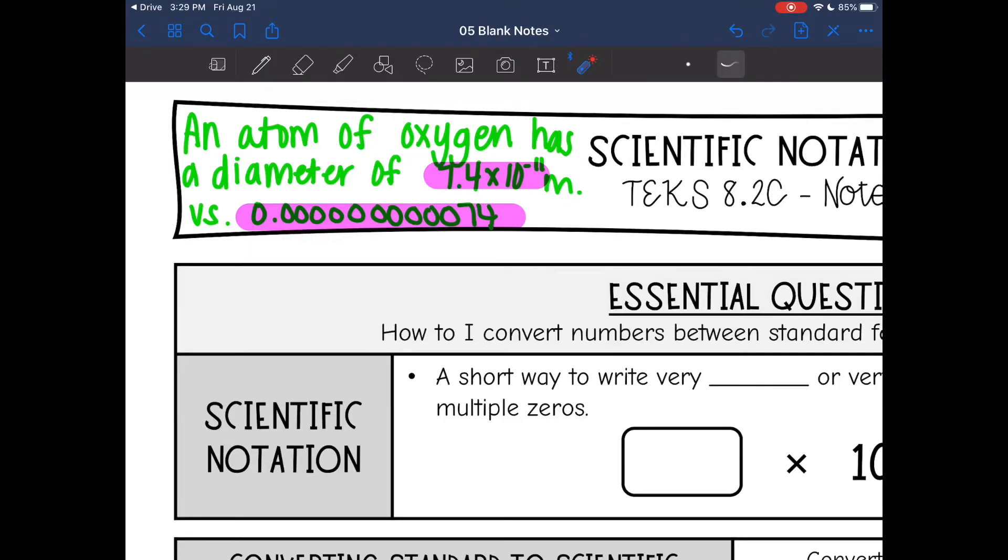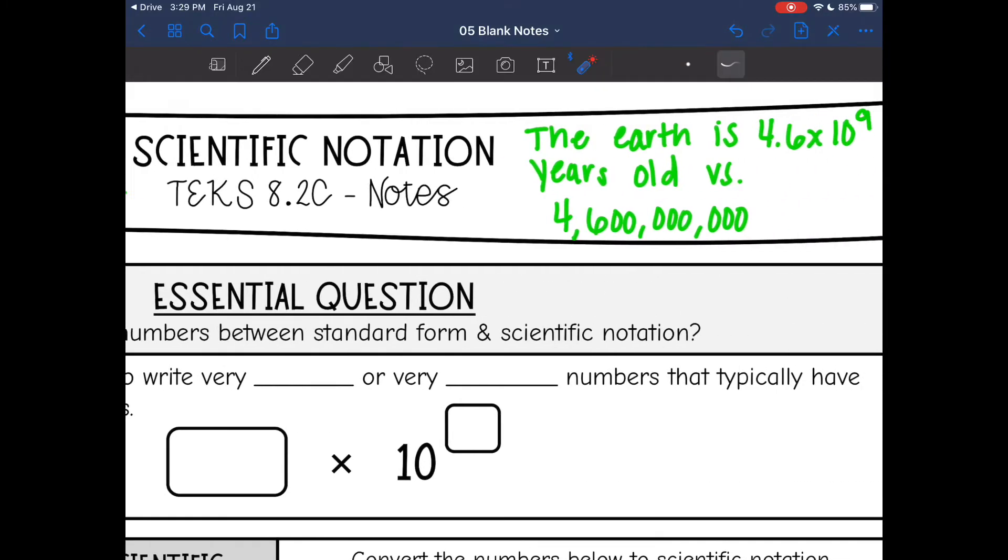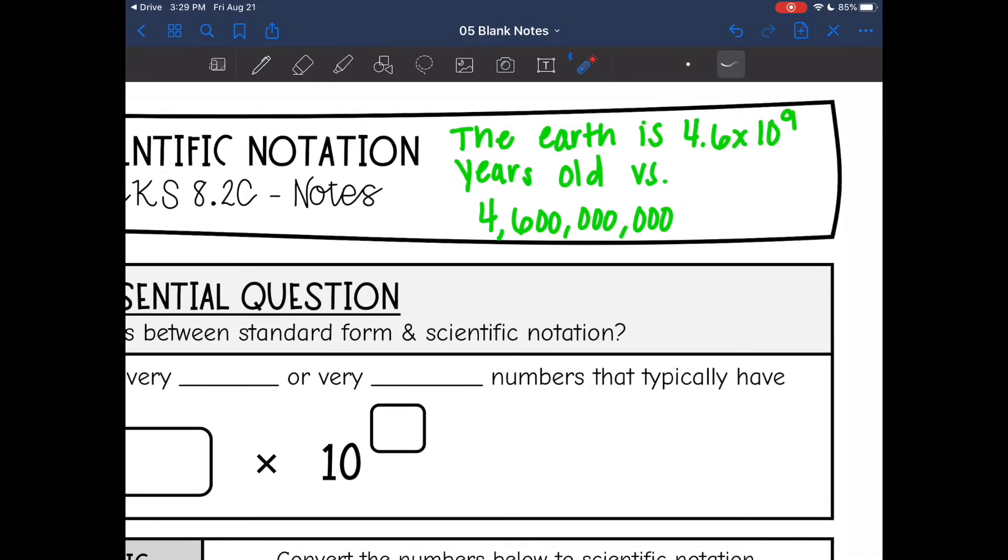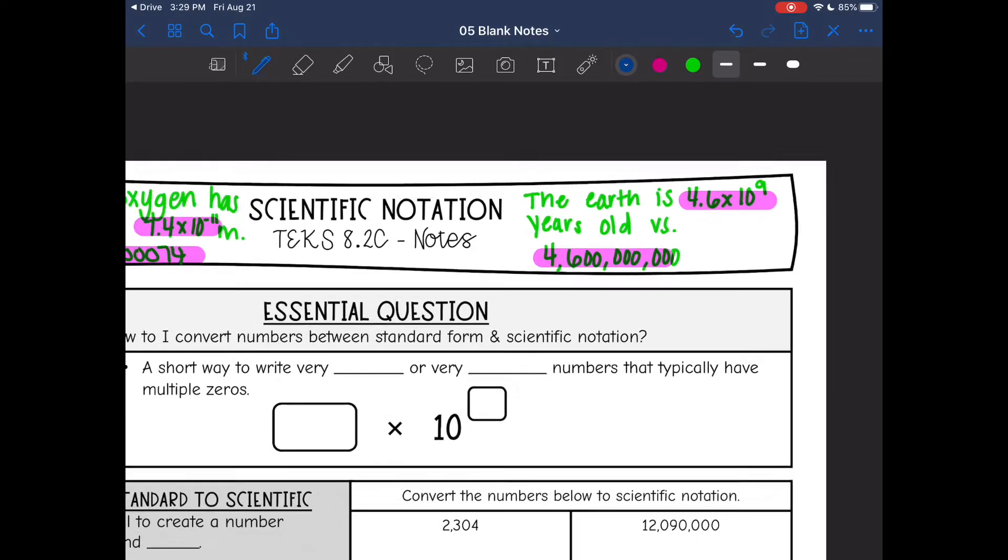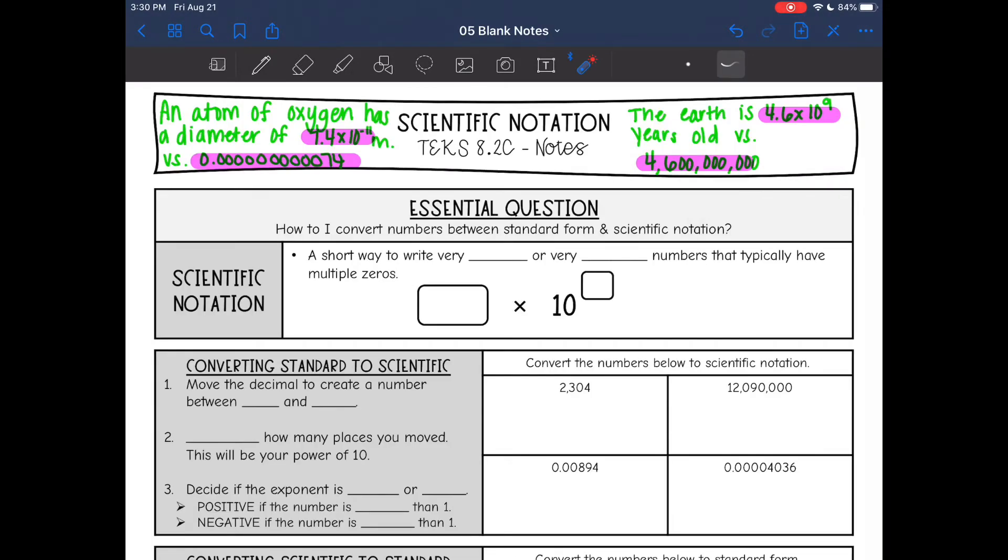So it's a way to write really small numbers. It's also a way to write really big numbers. This says the earth is 4.6 times 10 to the ninth years old versus this big number right here. So it's just an easier way to look at numbers and think about how big or small they are. So today we're going to answer the question, how do I convert numbers between standard form and scientific notation? Standard form is the way that we are used to seeing numbers, scientific is this new shorthand way.